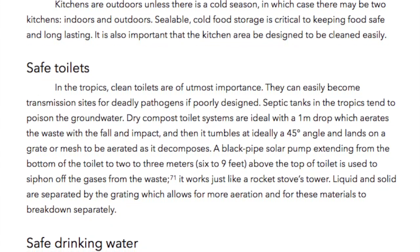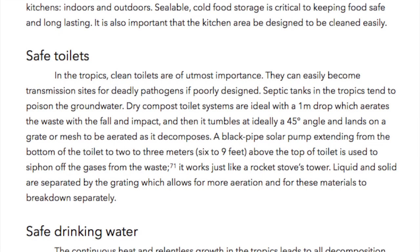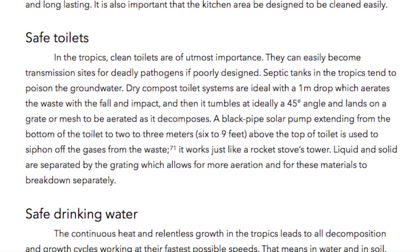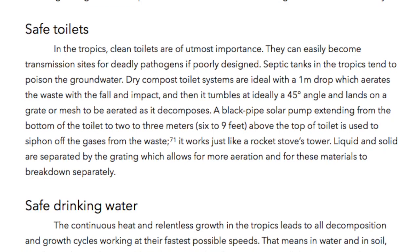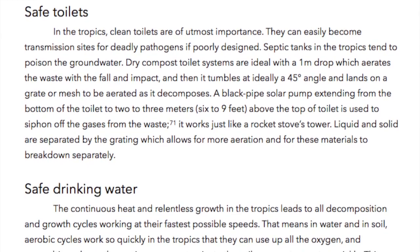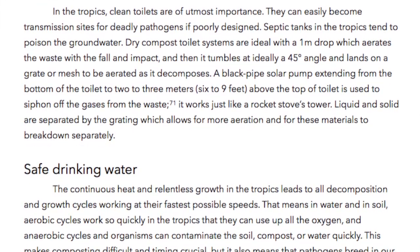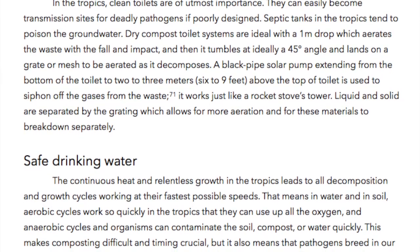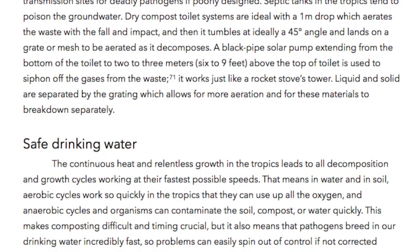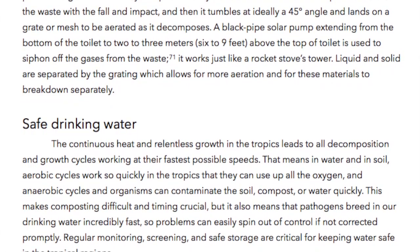Safe Toilets. In the tropics, clean toilets are of utmost importance — they can easily become transmission sites for deadly pathogens if poorly designed. Septic tanks in the tropics tend to poison the groundwater. Dry compost toilet systems are ideal, with a one-meter drop which aerates the waste with a fall and impact. It tumbles at ideally a 45-degree angle and lands on a grate mesh to be aerated as it decomposes. A black pipe solar pump extending from the bottom of the toilet to 2 to 3 meters above the top of the toilet is used to siphon off gases from the waste — it works just like a rocket stove's tower. Liquid and solid are separated by the grating for more aeration and so these materials break down separately.